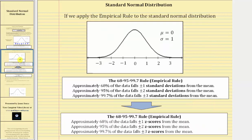And if we apply the empirical rule to the standard normal distribution, we can replace standard deviations with z-scores, and say approximately 68% of the data falls plus or minus one z-scores from the mean, approximately 95% of the data falls plus or minus two z-scores from the mean, and approximately 99.7% of the data falls plus or minus three z-scores from the mean.